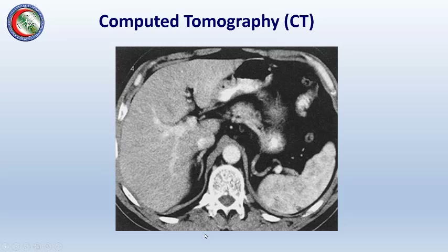Computed tomography gives cross-sectional images with the same grayscale principles as plain X-ray: bone appears bright, fat is darker, liver is intermediate like fluid. We can also inject contrast material — for example, the aorta here appears bright because intravenous contrast has been administered.